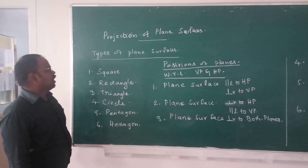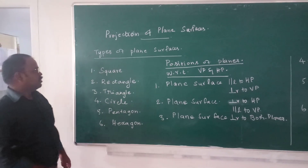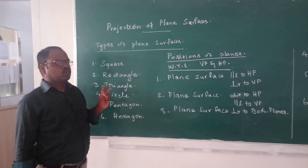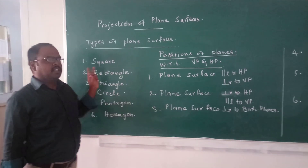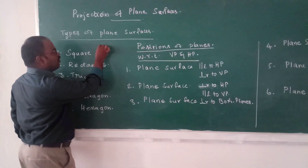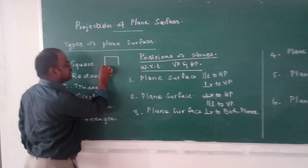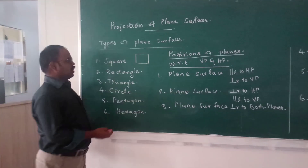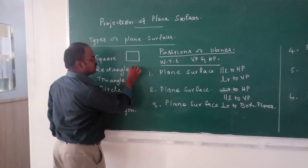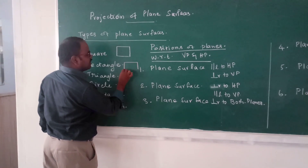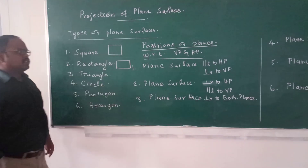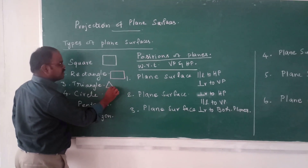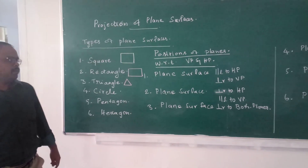First of all, we have to see the types of plane surfaces. One is square — the two sides of a square are the same. Rectangle is having two lengths and two breadths. Triangle is having three sides — they may be equal or unequal.